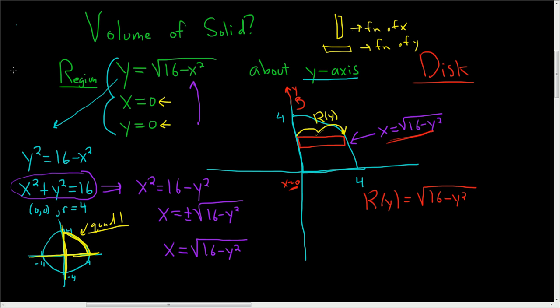And now we can go ahead and write down our volume. So the volume is equal to pi. And we're integrating with respect to y. So we'll go from 0 to 4. So 0 to 4. And we take big R of y and we square it. So it's going to be parentheses square root of 16 minus y squared. And this whole thing here is being squared. And this is dy.